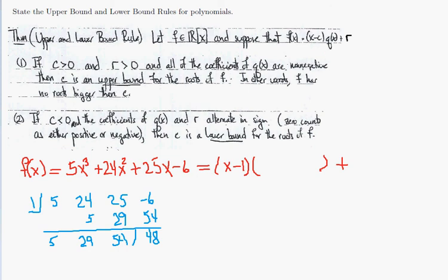So the quotient is 5x² + 29x + 54 and the remainder is 48. So 1 is not a root. However, we can definitively say that nothing bigger than 1 can be a root either.